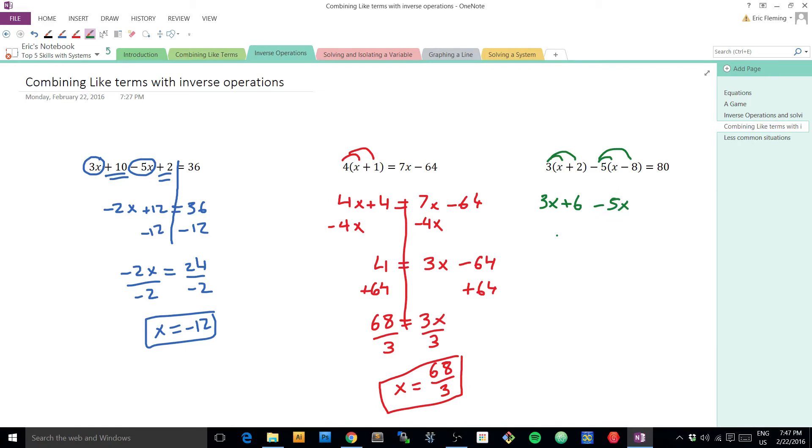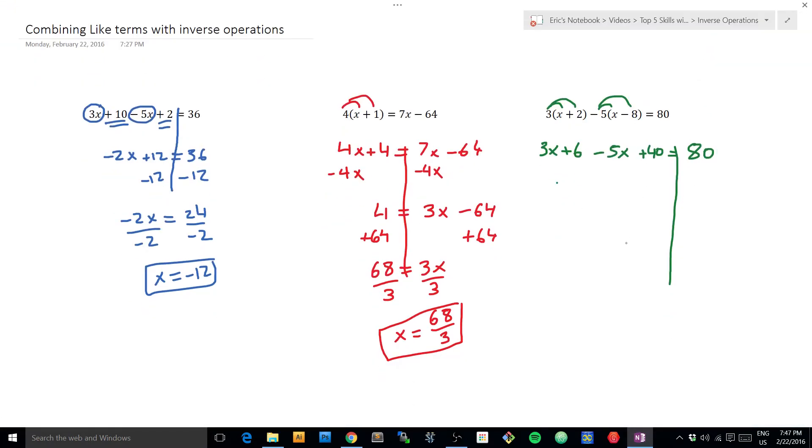So again, I've distributed, and I've come to the realization, whoa, there's a lot more on the left side of this equation than the right side of this equation. So that probably means there's some simplifying that can take place. I see that 3x's and minus 5x's would give me minus 2x's again. I see that 6 and 40 would give me 46. And so now that all of my terms that are alike are combined, I can start to think about the inner and outside layers, and start using those inverse operations.